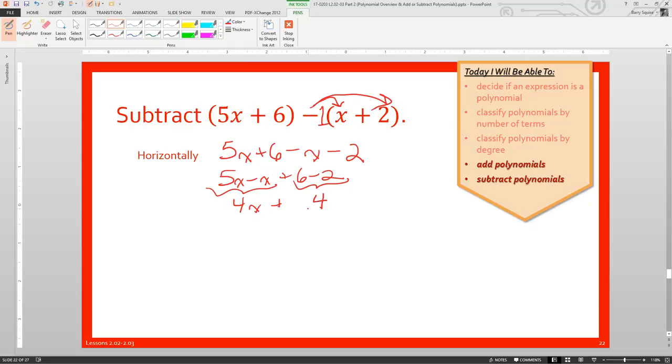And we get 4x plus 4. Now after a while, with some practice and all that pattern recognition that we talked about, it'll be pretty easy that you might not have to think about that negative 1. But for starters, it's always a good idea to think about that minus being a multiplication by negative 1.